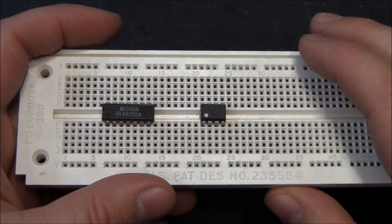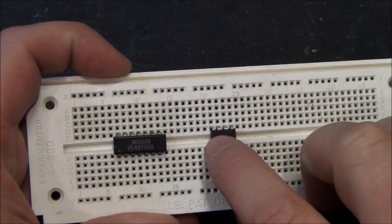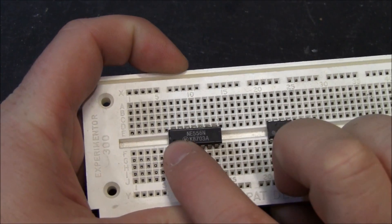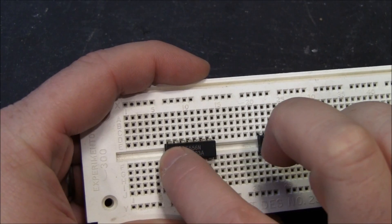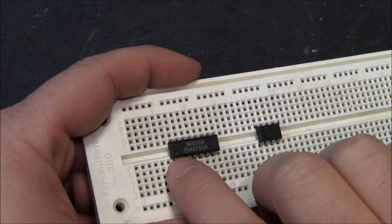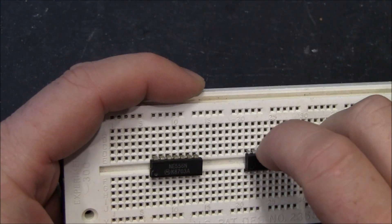One thing to notice on these chips is that there's usually a little dot or an indentation at the top. That indicates that if that's the top, this is pin one right here. We can count pin one, two, three, four, five, six, seven, eight.